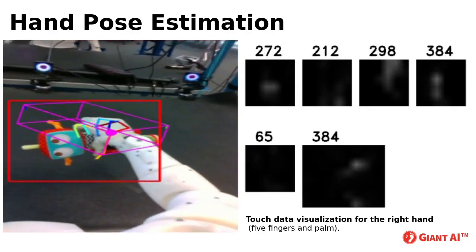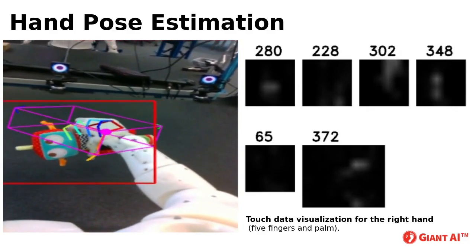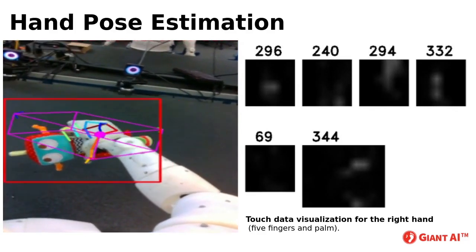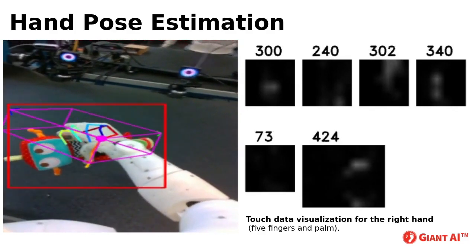In this way, when grasping, the robot uses vision to complement touch, just like humans do.